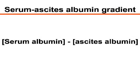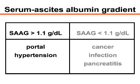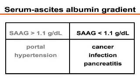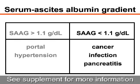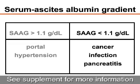Analysis of the fluid begins with a determination of the serum ascites albumin gradient. Gradients higher than 1.1 grams per deciliter indicate that the ascites is due to portal hypertension. Gradients less than 1.1 grams per deciliter suggest other causes, such as cancer, infection, or pancreatitis.